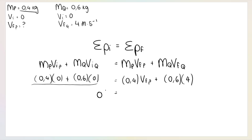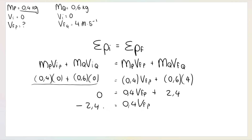The right-hand side gives us 2.4 from 0.6 × 4, plus 0.4 × vf(P). Since the left side is zero, we take 2.4 to the other side — it becomes −2.4. So 0.4 × vf(P) = −2.4. Dividing by 0.4 gives vf(P) = −6.